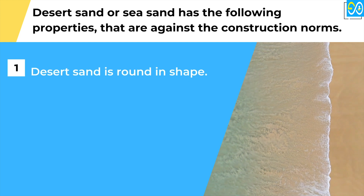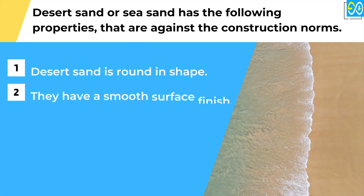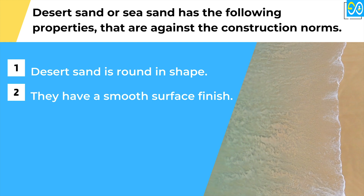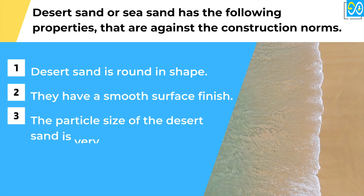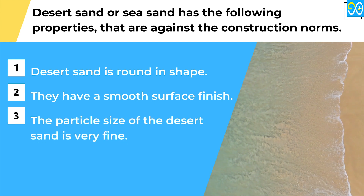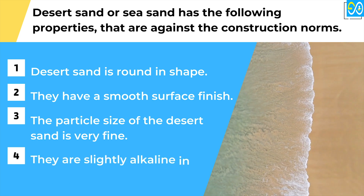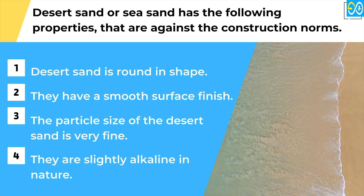Desert sand is round in shape. They have a smooth surface finish. The particle size of the desert sand is very fine. They are slightly alkaline in nature.